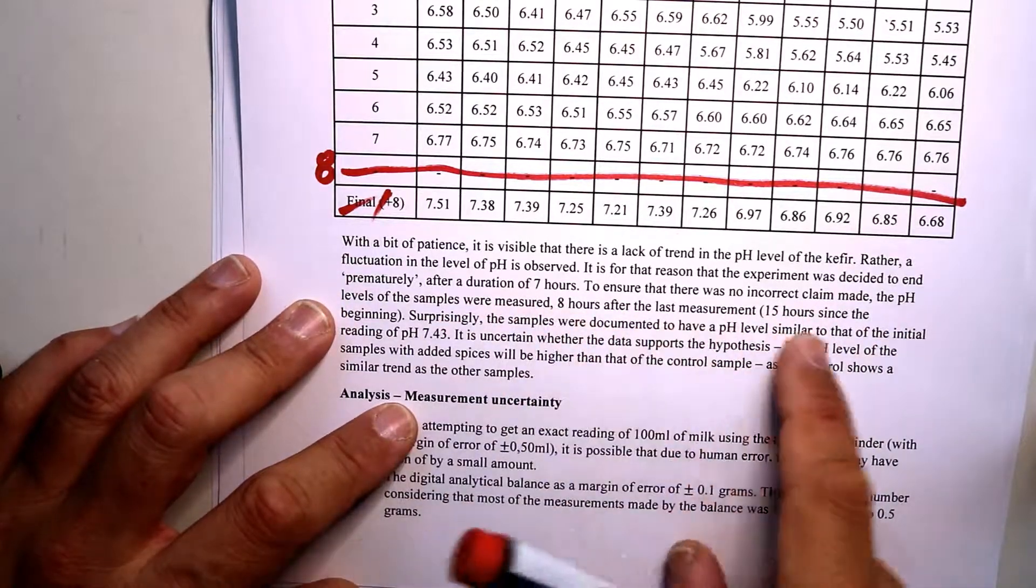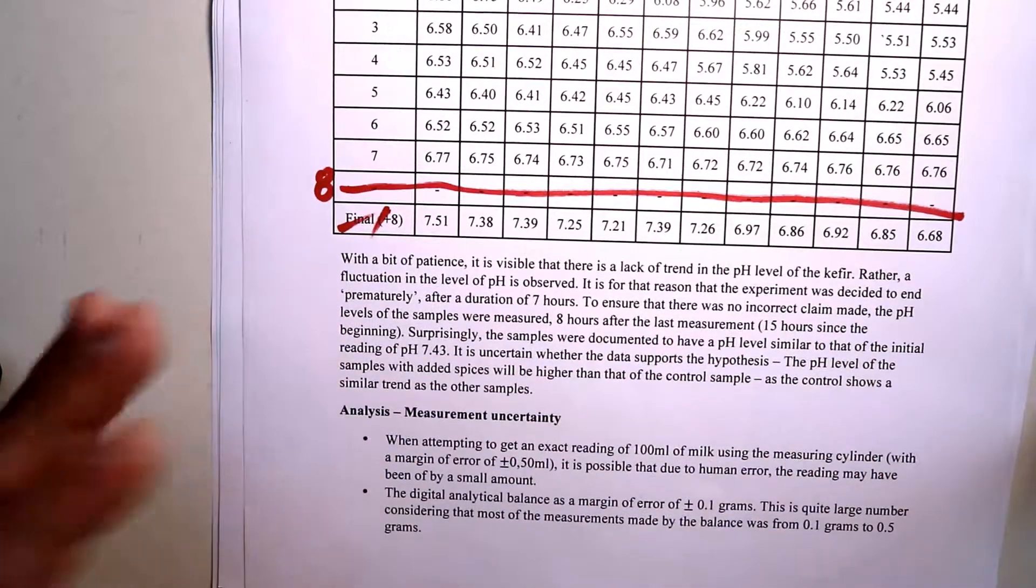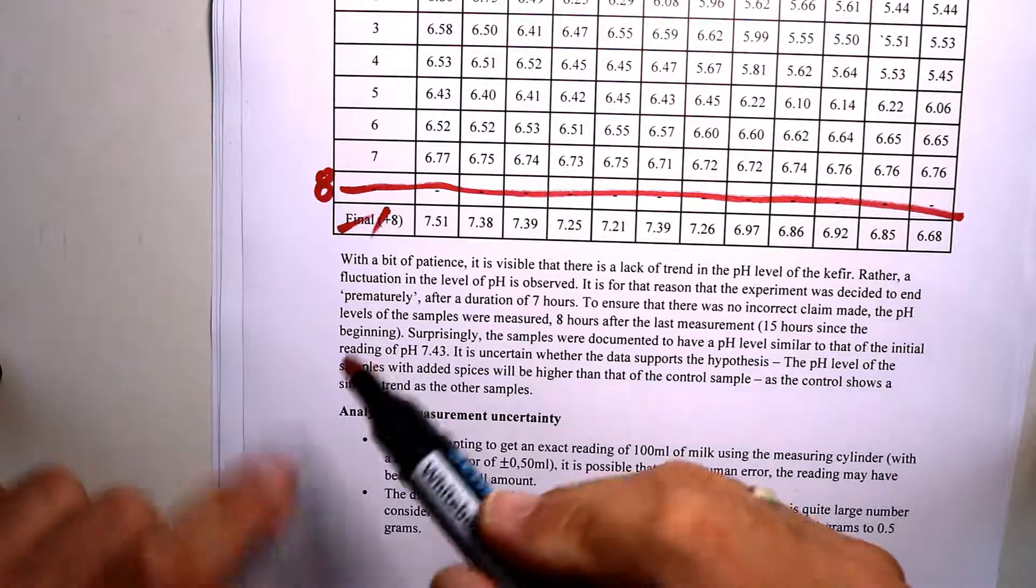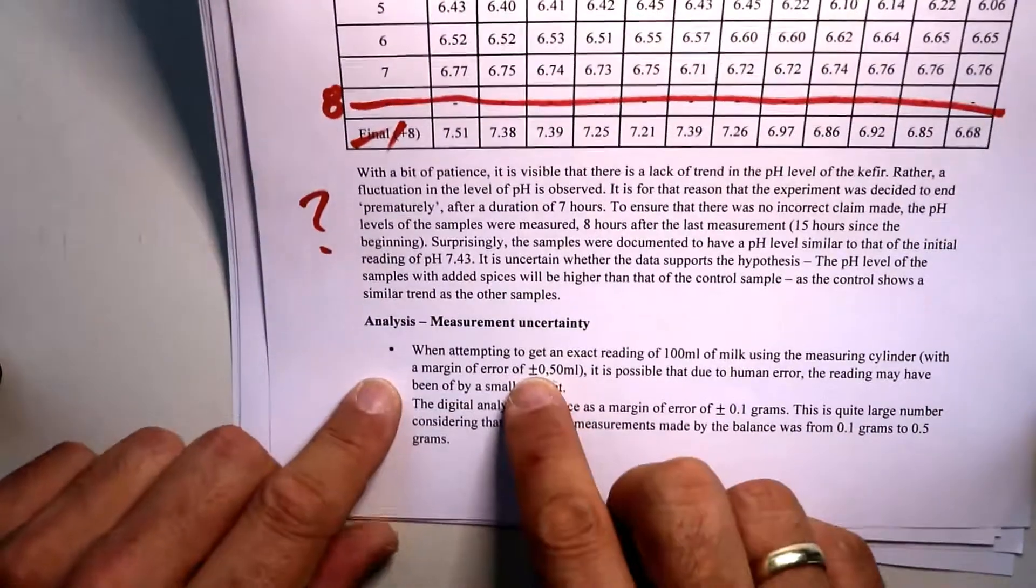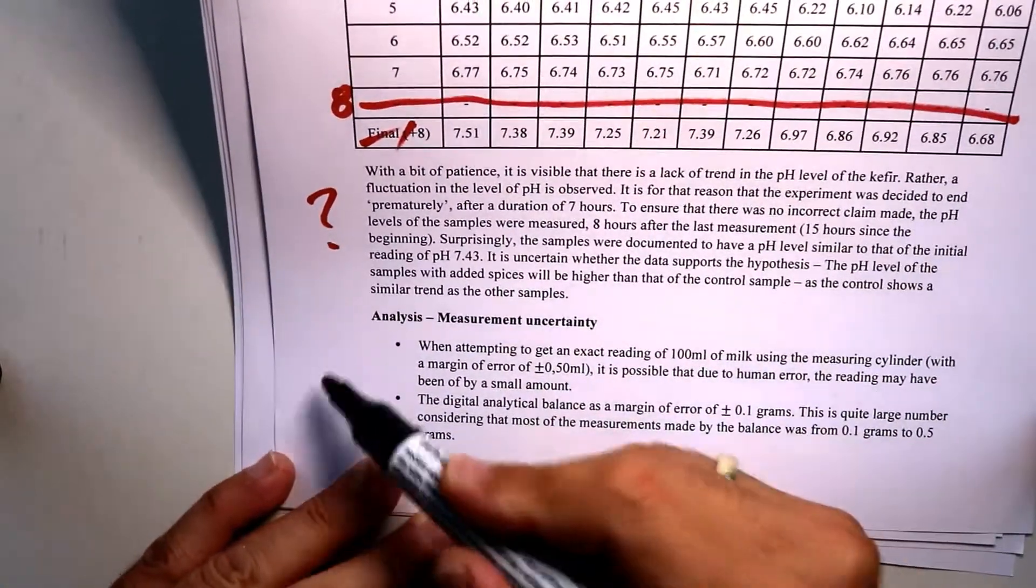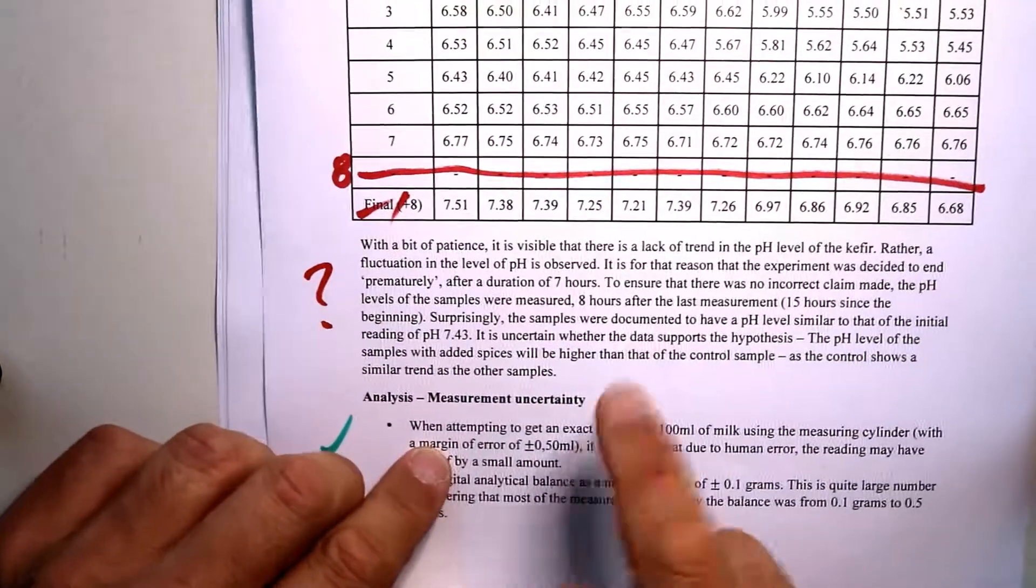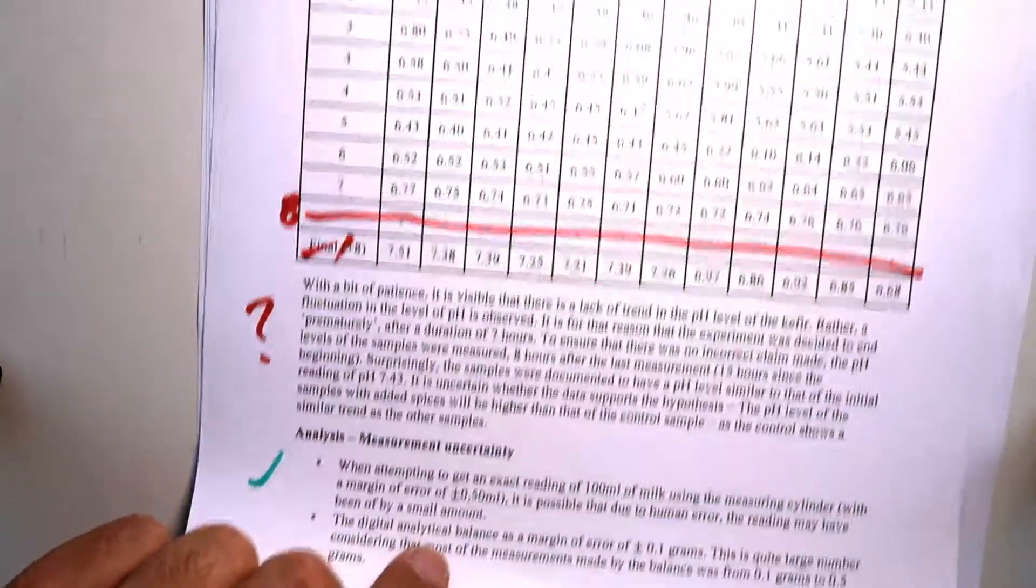Yeah, so with a bit of patience it is visible. To ensure there was correct pH, this sounds like an evaluation a little bit, but I actually wanted to see a description of the data table. Okay, measurement uncertainty. Okay, tries to address the measurement uncertainty, which is okay, but I want to actually see not only from the measurement but actually also from the collected data if there's a variation.